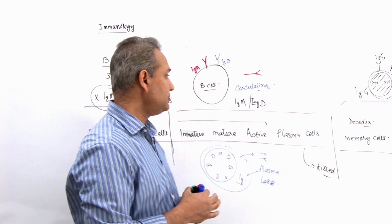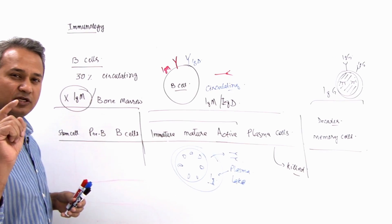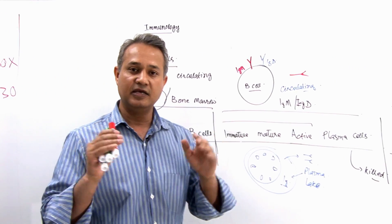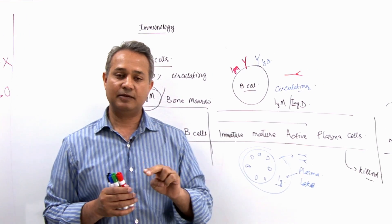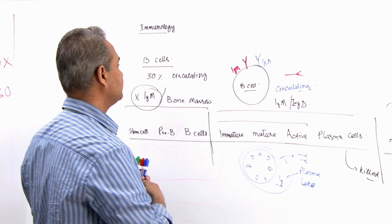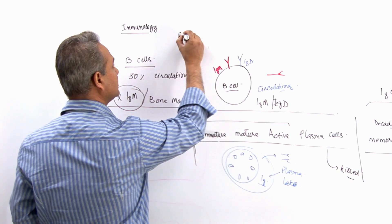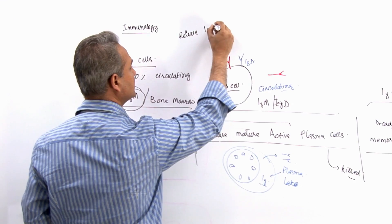Now the question is what are the two functions? Let's step back and talk about the functions of a B-cell. B-cell primarily has two functions. One function is to make and release immunoglobulins.